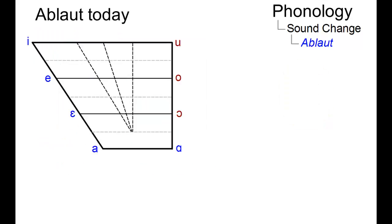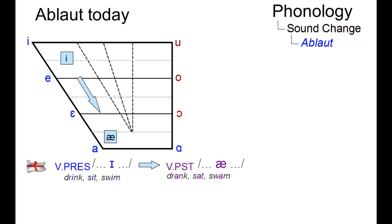This feature is still used in many Indo-European languages. For example, in English verbs, where the past tense is formed by a change from short e to short a, as in drink drank, sit sat, or swim swam.